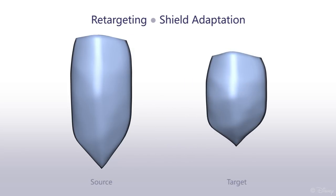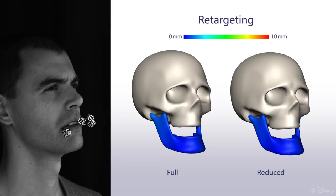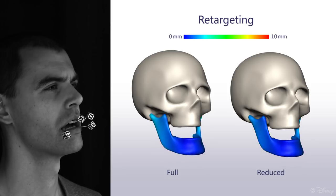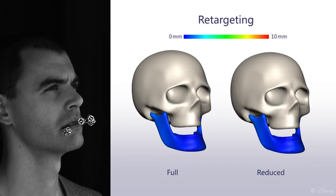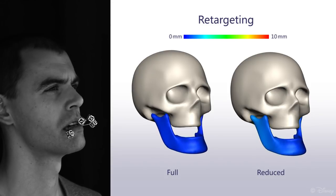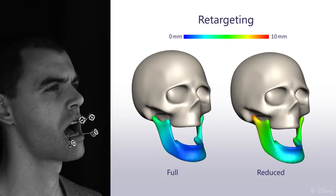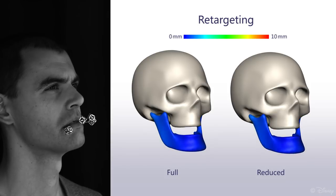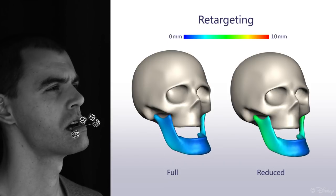We now evaluate our retargeting method, which requires only a sparse set of extremal poses as input for the target subject. Our adaptation method deforms the reference shield to the target. In this case, the target subject was not able to open his jaw as wide as the source. We propose two flavors of retargeting: a full adaptation where the complete jaw pose is provided for the sparse inputs, and a reduced adaptation if only the interior point is given.